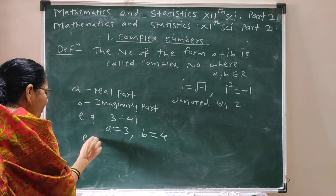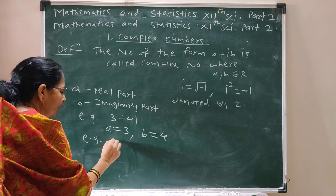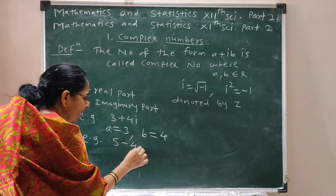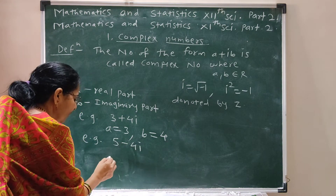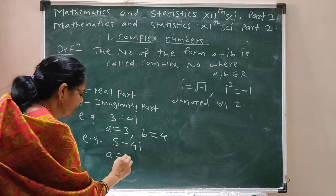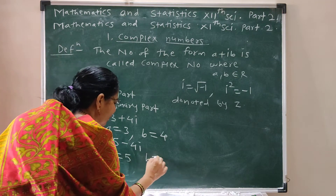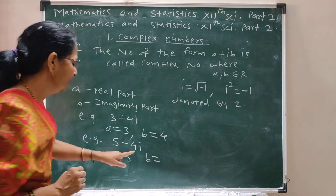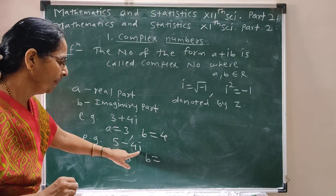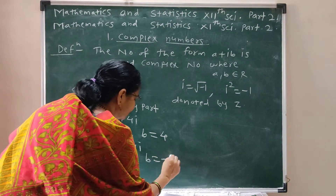Similarly, for example, if we take 5 minus 4i: the Real Part A is 5, and the Imaginary Part is the coefficient of i, which is minus 4.